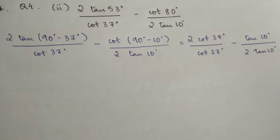So tan (90° - 37°) equals cot 37°, and we can cancel this. Similarly, cot (90° - 10°) equals tan 10°, and we can cancel this as well.